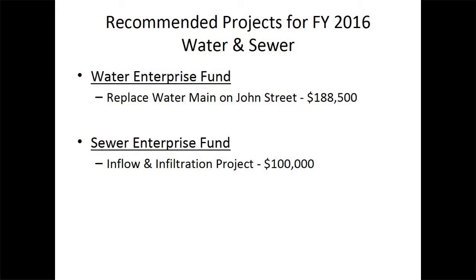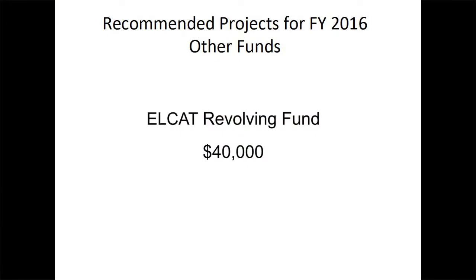Other recommended projects for FY16 include the Water Enterprise Fund to replace a water main on John Street at $188,500. The Sewer Enterprise Fund covers inflow and infiltration projects — where the DPW inspects sewer lines for leakage so we don't pay the city of Springfield for unnecessary water leaking into our sewer system — at $100,000. We also have a Cable Access Revolving Fund at $40,000.